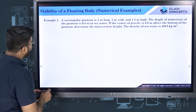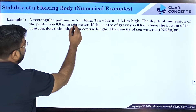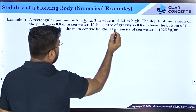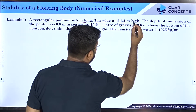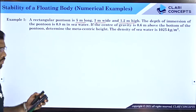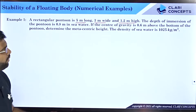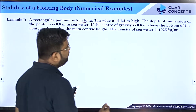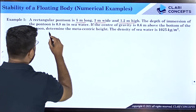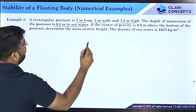The first example says that a rectangular pontoon is 5 meters long, 3 meters wide, and 1.2 meters in height. The depth of immersion of the pontoon is 0.8 meters in sea water.